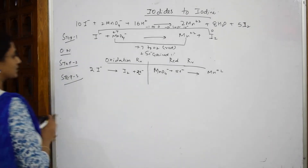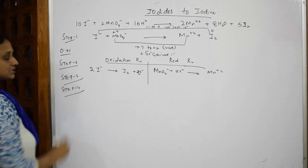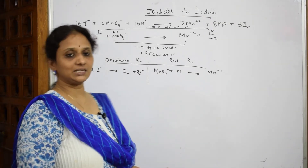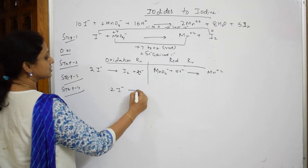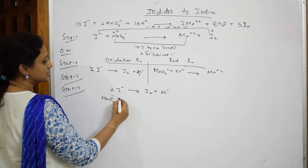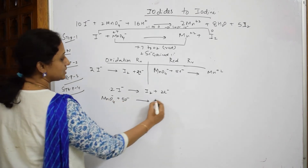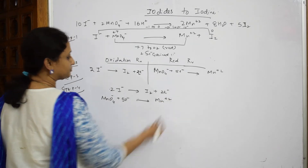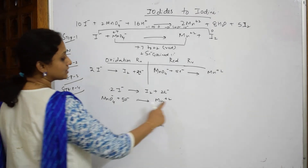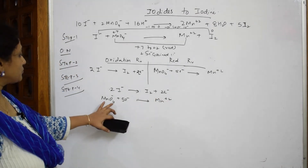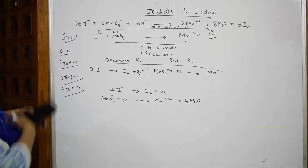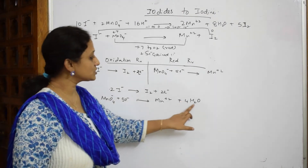In Step 4, balance the oxygen atoms. For the reduction half-reaction, MnO₄⁻ has 4 oxygens on the left and none on the right, so add 4 water molecules to the right-hand side. To balance the hydrogen in those 4 water molecules, add 8 H⁺ protons to the left-hand side.